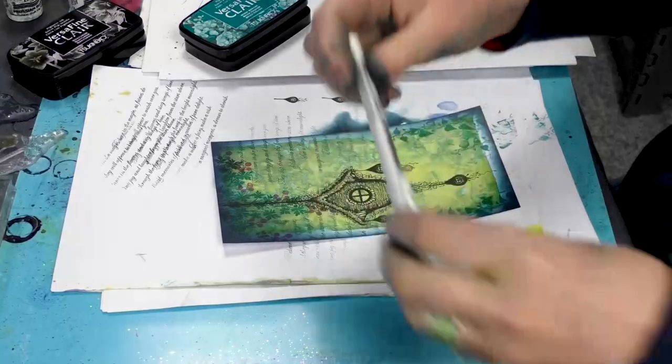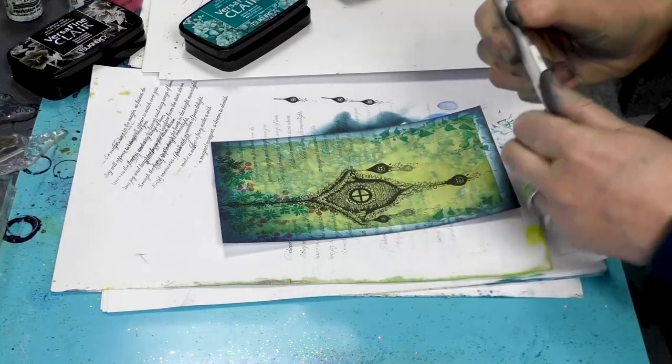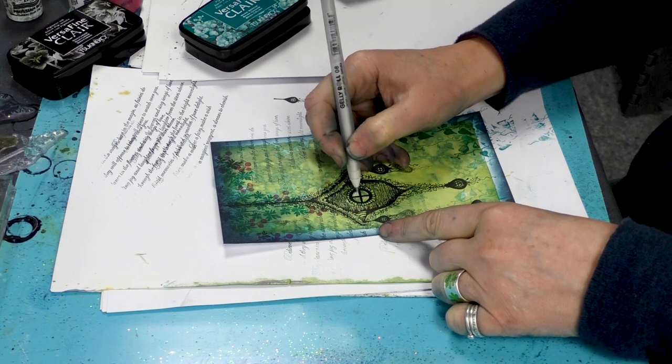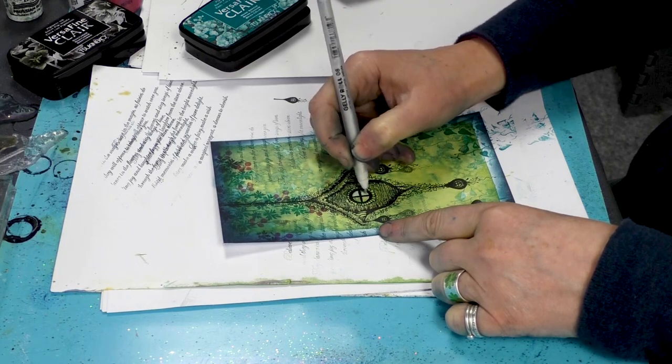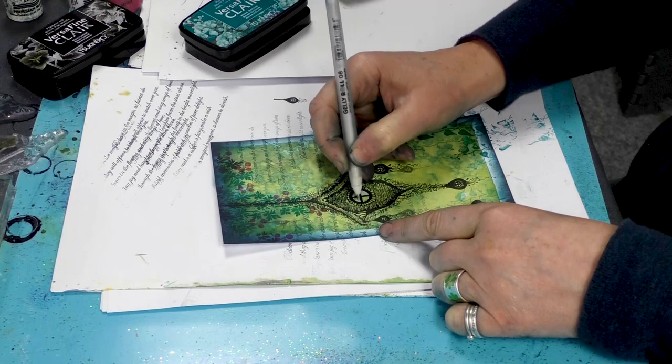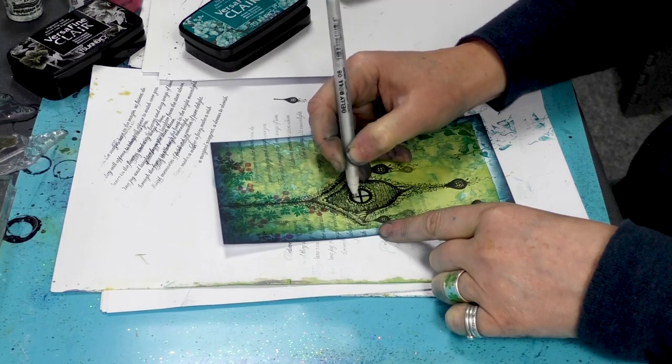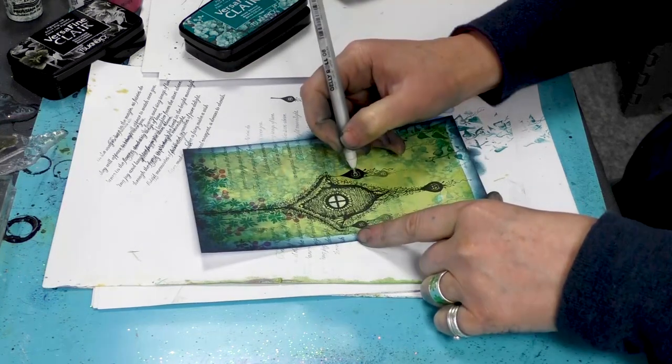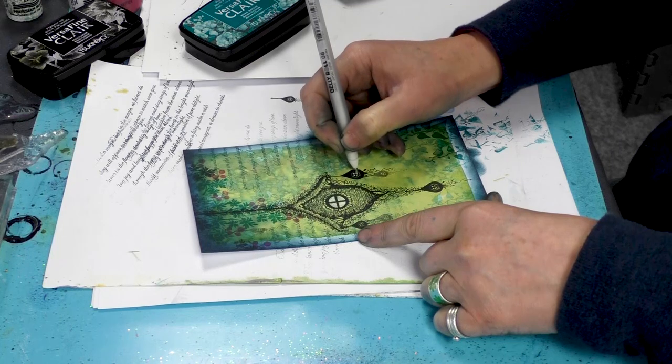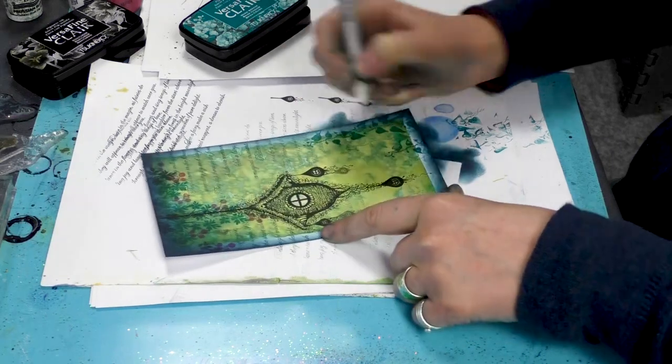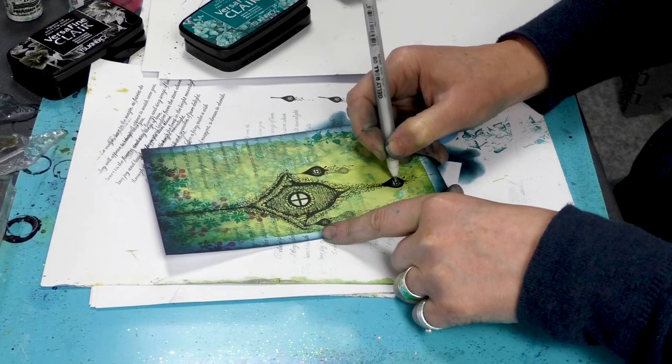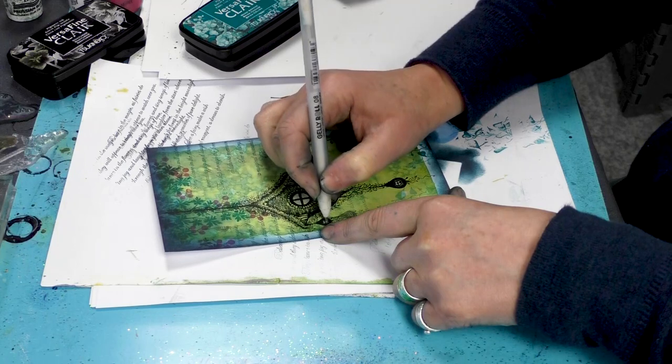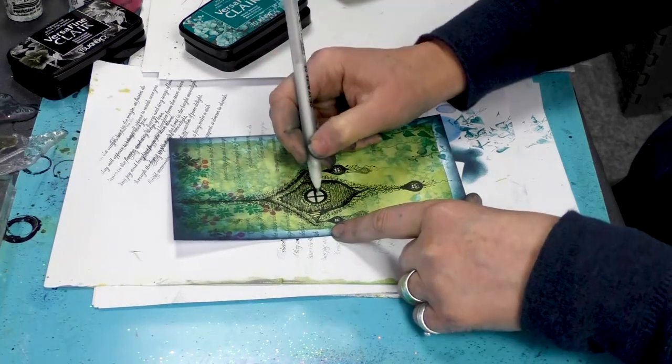I'm going to take the jelly roll pen that I've got here, the white, and I'm just going to add the white in the windows here. And we'll do it in the little tiny hives as well. Just like they've got their lights on, so if someone is at home.